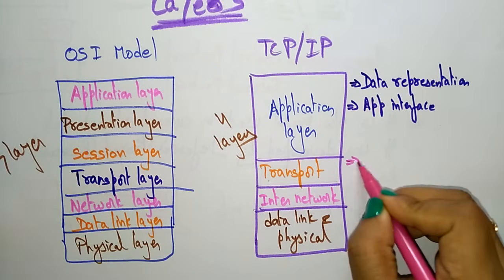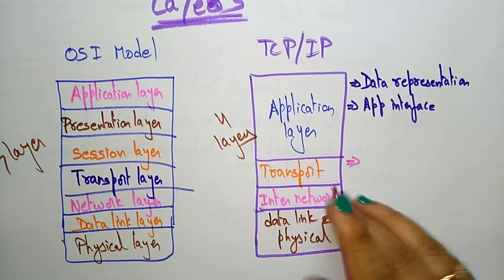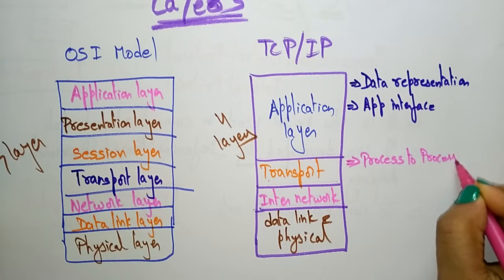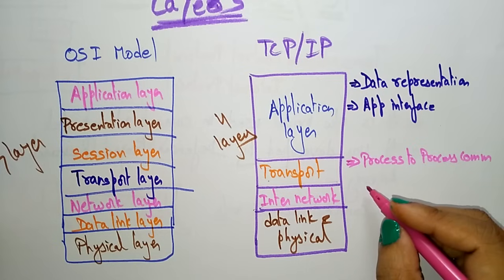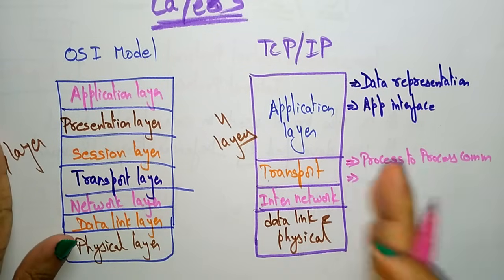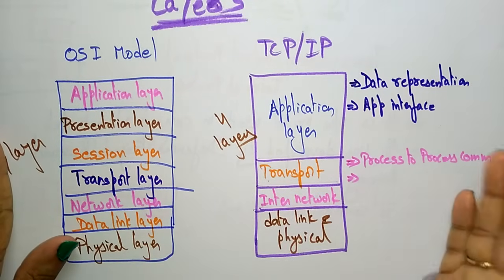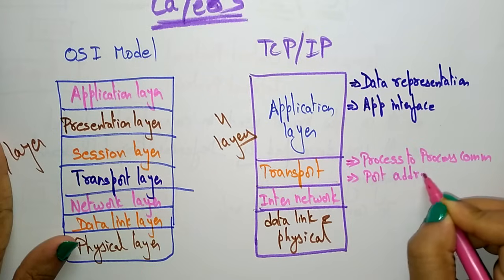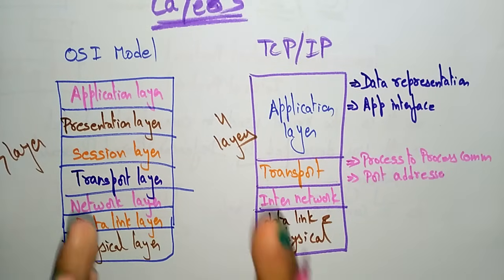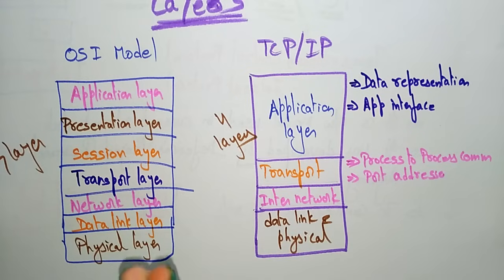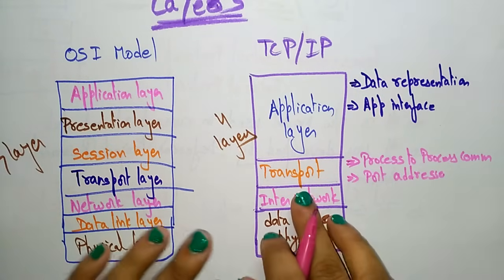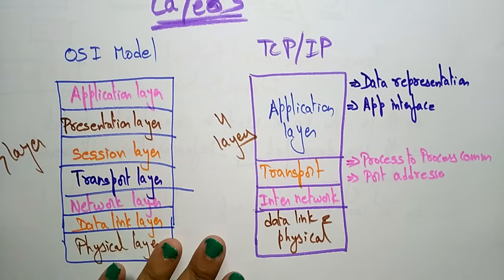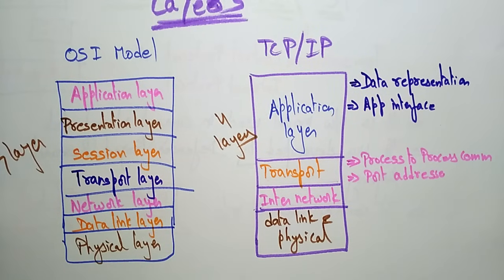The transport layer is responsible for process-to-process communication, and port addresses are used for communicating from process to process. Just like sending a letter requires an address, the transport layer requires a port address. If you know the port address, you can transfer and process data from one system to another.